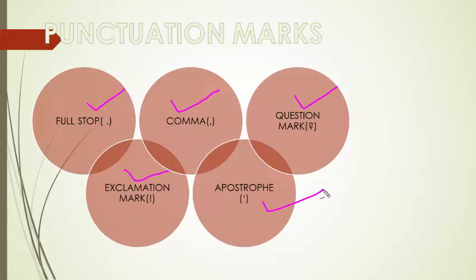Next is apostrophe. We use an apostrophe followed by an S to show that something belongs to someone. We also use an apostrophe to indicate the shortened form of some words in informal speech.